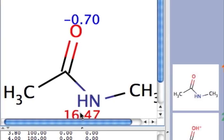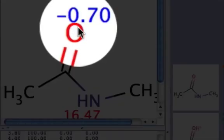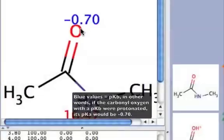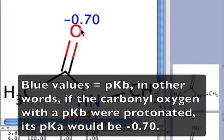Whenever you see a blue value within this pKa calculator, such as the one you see here on the top of this amide oxygen, it gives you the pKb value. So therefore, the pKa of the conjugate acid of this particular atom here, so if you were to add a proton onto here,